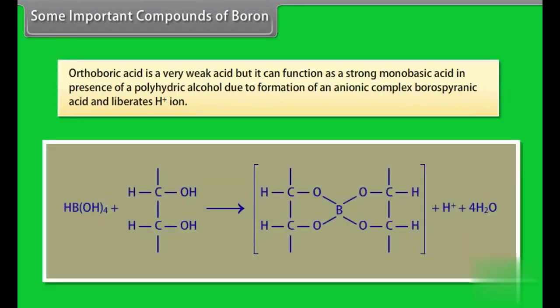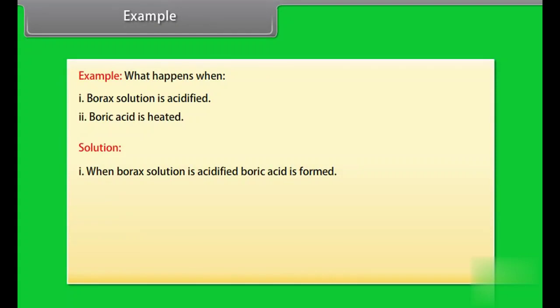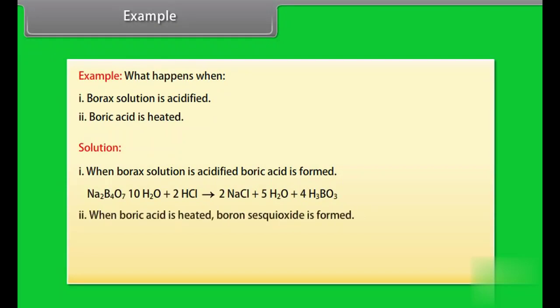Orthoboric acid is very weak acid but it can function as a strong monobasic acid in presence of a polyhydric alcohol due to formation of an anionic complex borospiric acid and liberates H+ ions. Example: What happens when borax solution is acidified and boric acid is heated? When borax solution is acidified, boric acid is formed. When boric acid is heated, boron sesquioxide is formed.